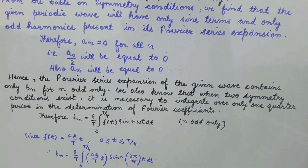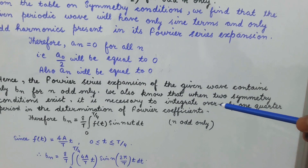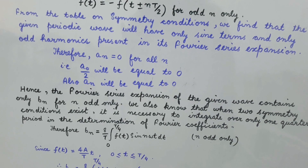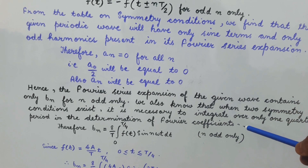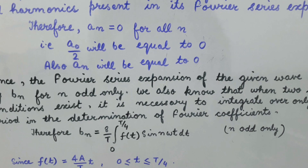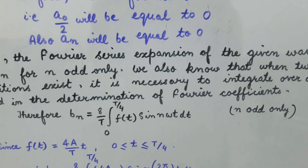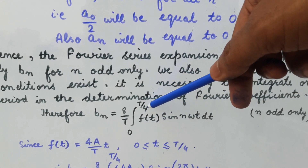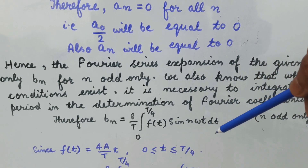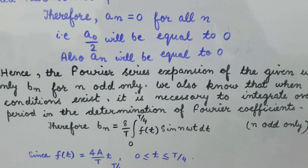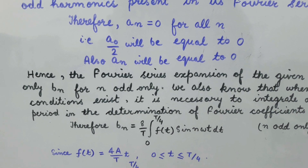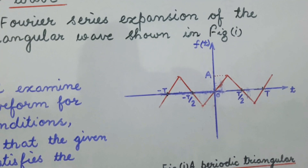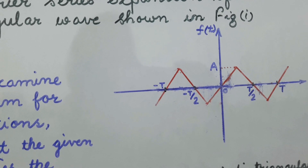Hence the Fourier series expansion of the given wave contains only b_n for all odd n. We have also seen that when two symmetry conditions exist, it is necessary to integrate over only one quarter period in the determination of the Fourier coefficients. That is, b_n = (8/T) × integral from 0 to T/4 of f(t) × sin(nωt) dt, for odd values of n only.